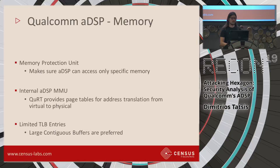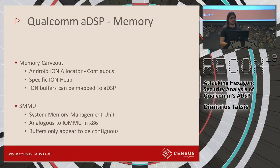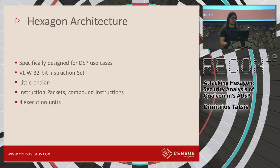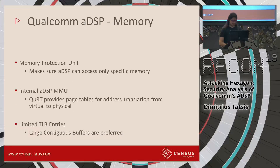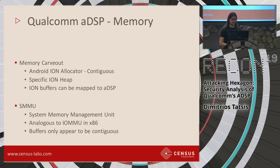The documentation states that there are limited TLB entries, so large contiguous buffers are preferred. There are two main mechanisms for that: the first is the memory carve-out system, which is built on top of the Android Ion allocator — a special allocator that provides contiguous buffers in physical memory, with a specific Ion heap for ADSP usage, and Ion buffers can be mapped to the ADSP. There's also a System Memory Management Unit (SMMU), analogous to the IOMMU in x86, which can provide another level of translation so memory buffers appear contiguous but aren't in reality.